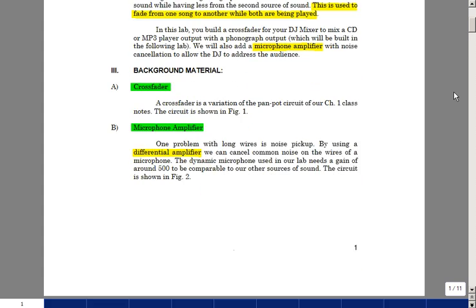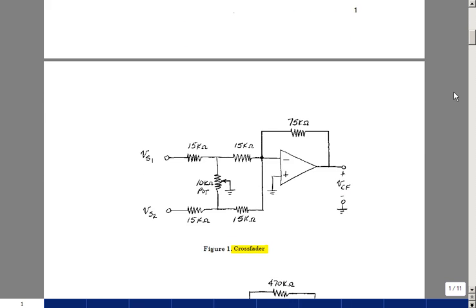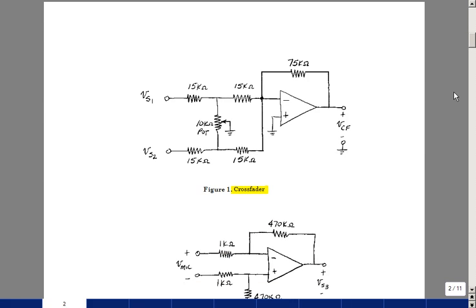Figure one is a Crossfader. This is similar to the Pan-Pot circuit that we talked about in class except now we've got two inputs and one output. So if this was stereo we would be doing this as a left or right channel. This would be one source of sound, say our CD player, and this would be the output of a second source of sound which could be a vinyl record output. One of the things I'll ask you to do for the pre-lab is to analyze this circuit and have some idea how it works before you come to the lab.